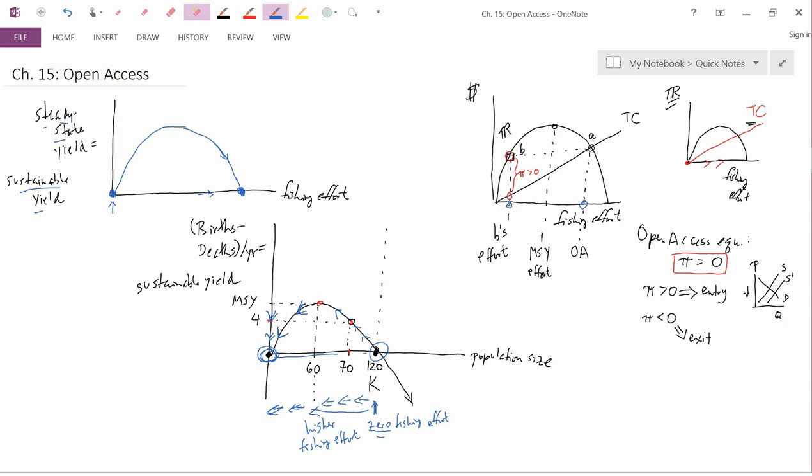So why did I say A is the equilibrium when everybody would prefer B? Well, suppose the industry tried to enforce B's level of effort, which is down here. So the firms get together and they say, guys, we're all going to cut down on the amount of fishing that we do all the way so that in the aggregate, we get all the way down to B. And, well, they'd be making this nice amount of profit. But the problem is, even if they, so one problem is entry.